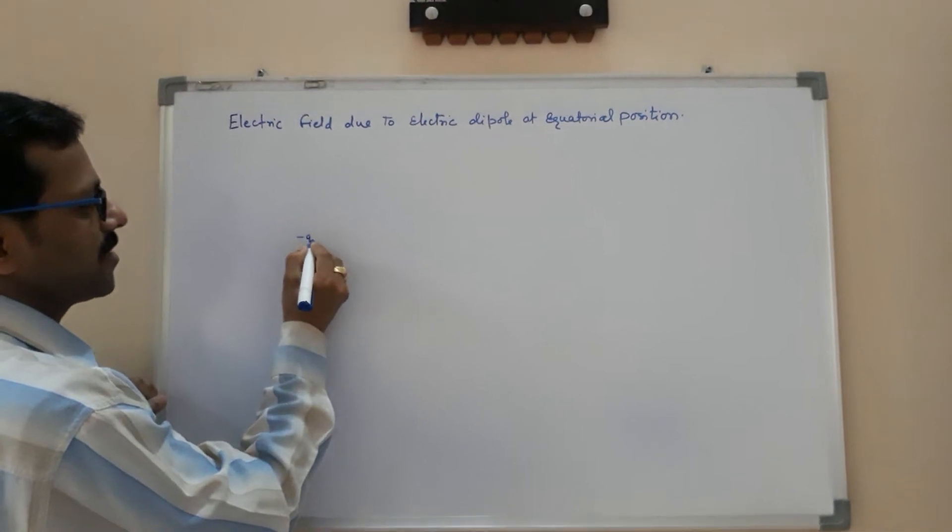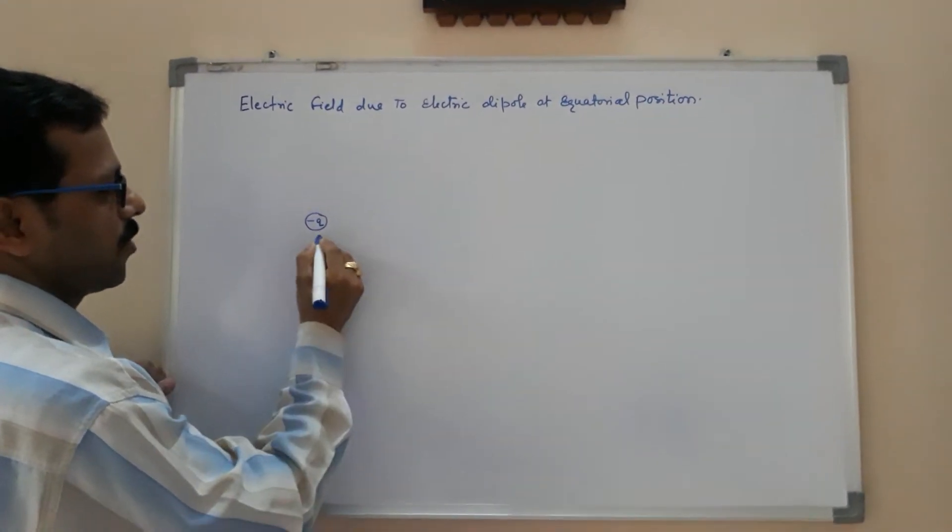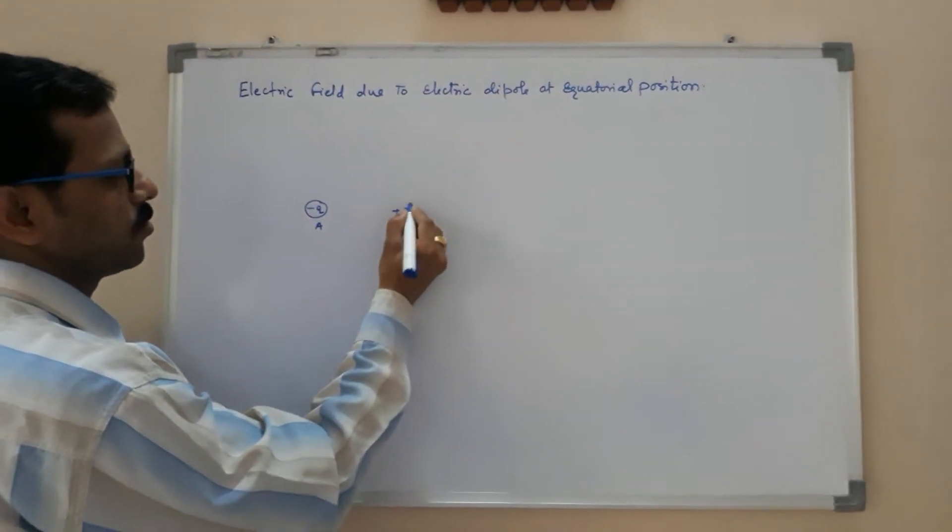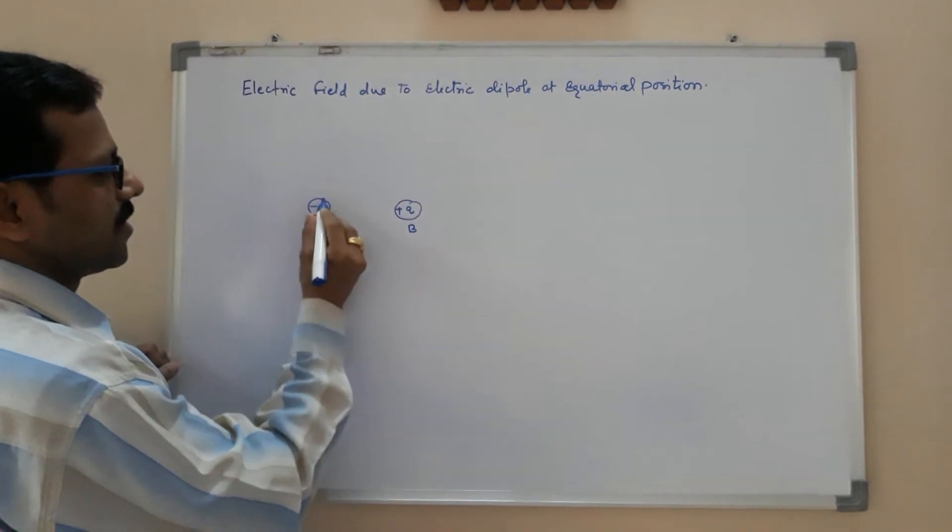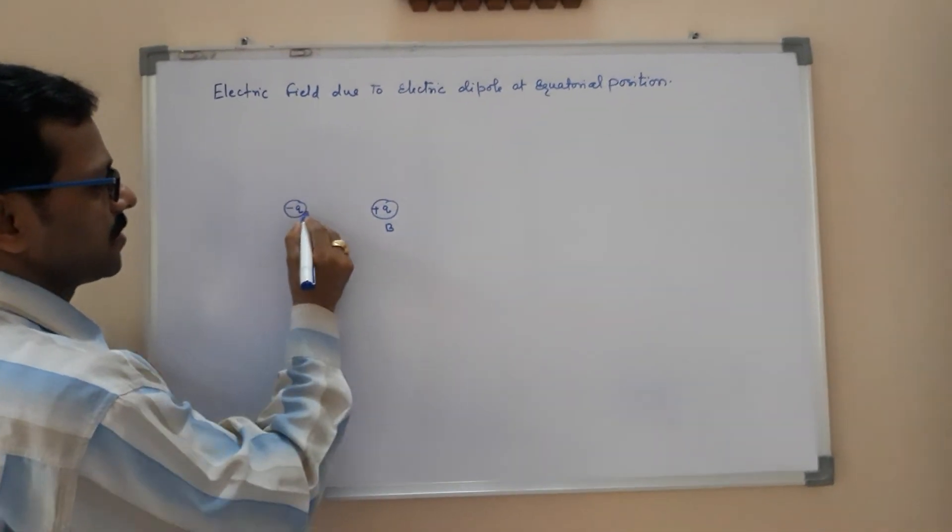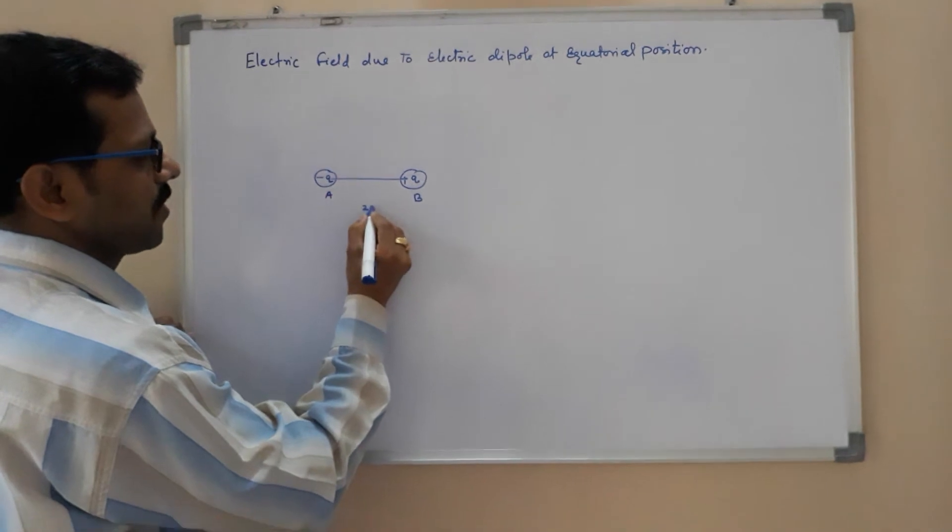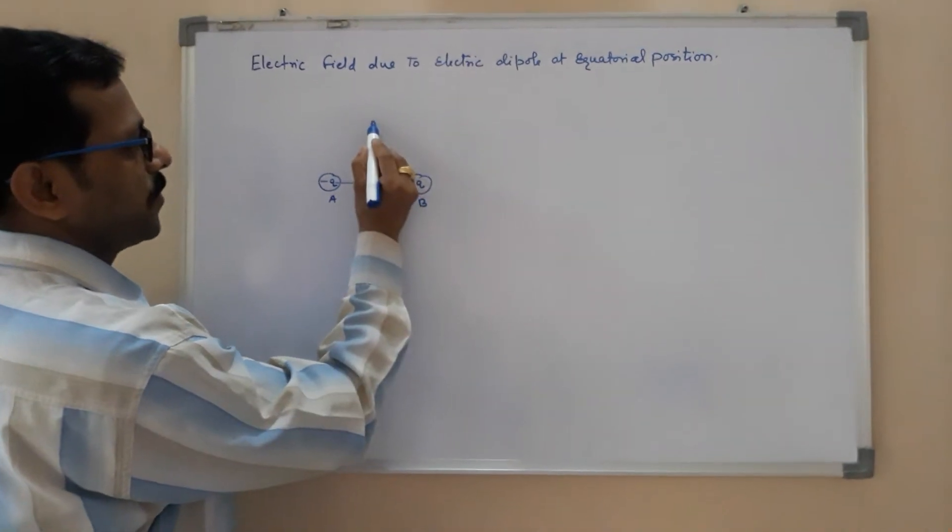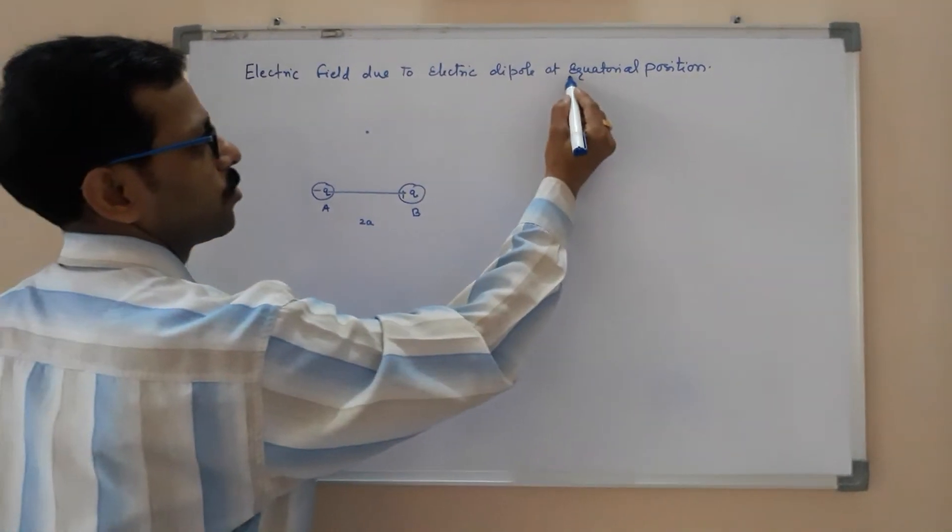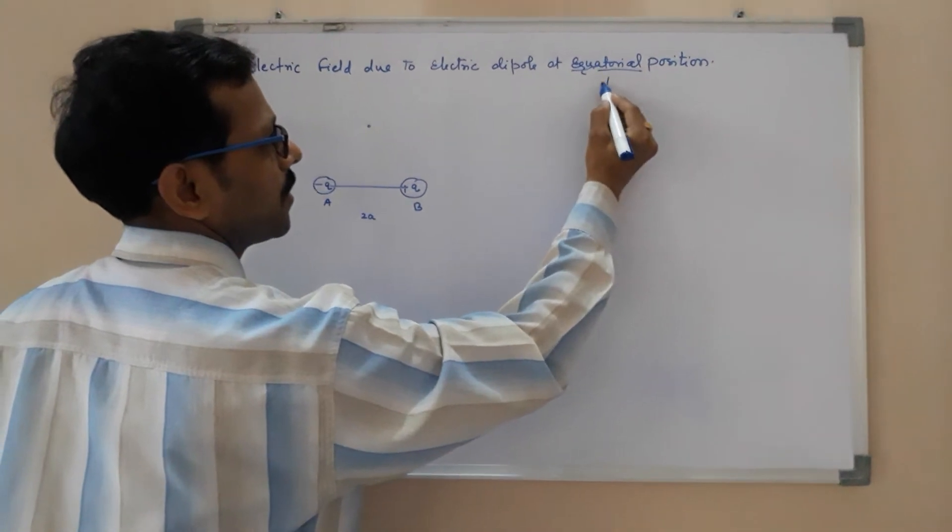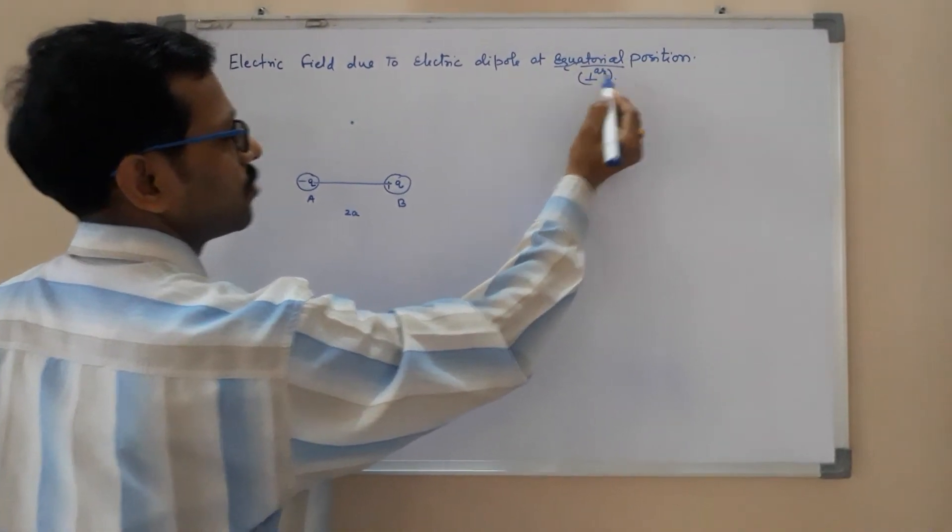At point A and another charge plus Q at B point. The distance between them is 2A. Now take a point P, which is equatorial, that is perpendicular to the dipole.